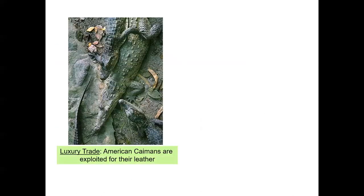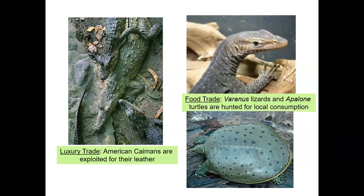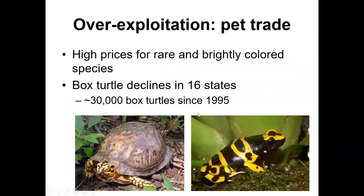Commercialization of wildlife has potential negative side effects. The food trade concentrates on larger, long-lived species — things like crocodilians and Chelonians, specifically turtles. We have lots of documentation that long-lived Chelonian species are highly sought after for the food trade. Many species are also highly sought after for the pet trade — it's a vicious cycle where high prices are paid for species that are rare or brightly colored, and the more rare they are, the higher the price. That's one reason box turtles have been declining in about 16 states and are now listed as a species of special concern in Indiana largely because of the pet trade.